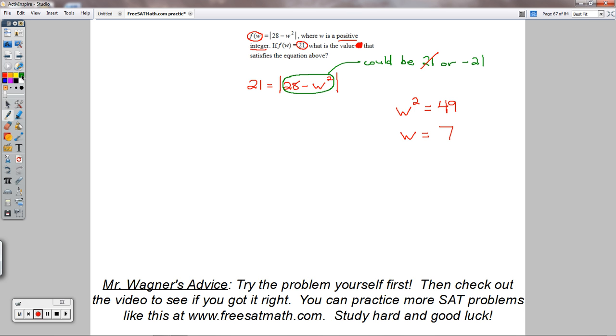So if I go back up here just to show you that that works out now, 21 equals the absolute value of 28 minus 7 squared. Let's see if this is actually true. So I'd have 21 equals 28 minus 49.